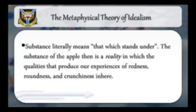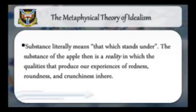It is quite clear that Locke sees no alternative to the claim that there are substances supporting qualities. He does not, for example, have a theory of tropes — properties that can exist independently of substances — which he might use to dispense with the notion of substance. In fact, he may be rejecting something like a theory of tropes when he rejects the Aristotelian doctrine of real qualities and insists on the need for substances. He is thus not at all a skeptic about substance in the way that Hume is, but it is also clear that he is regularly insistent about the limitations of our ideas of substances.